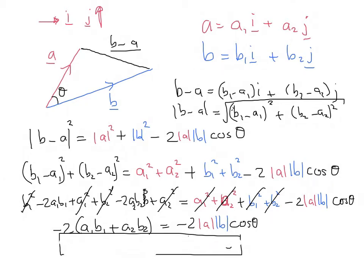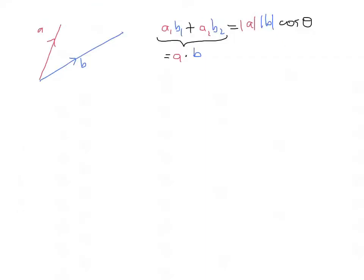So what we've actually got here is a1 multiplied by b1, plus a2 — that's the j component of a — multiplied by b2, and that's equal to |a| times |b| cosine theta. So that is our really important formula, and the left-hand side — this thing here — is what we call a dot b. On the left-hand side of our equation, a dot b: a1 is how far across, how much x there is in a; b1 is how much x there is in b, so we multiply them together and add on the j component of a multiplied by the j component of b. So it's really easy to do in practice if you use column notation.